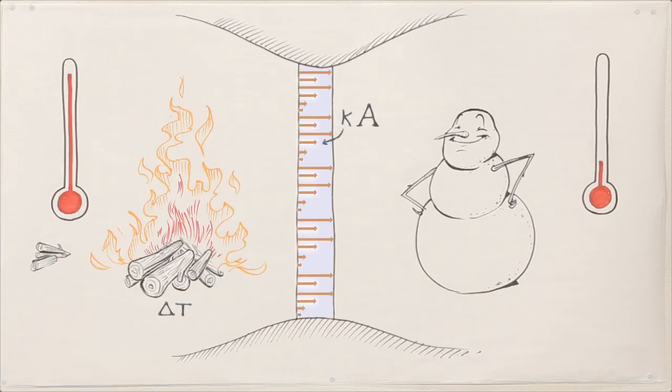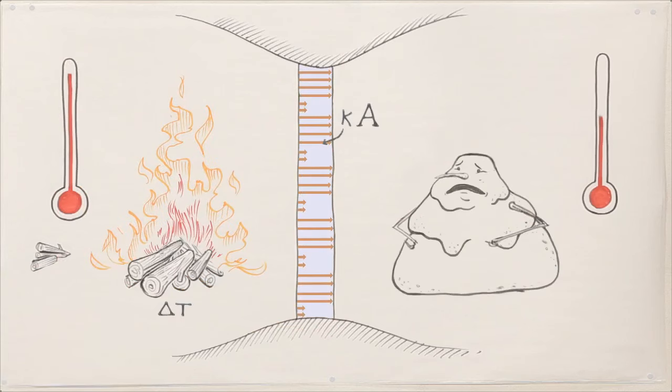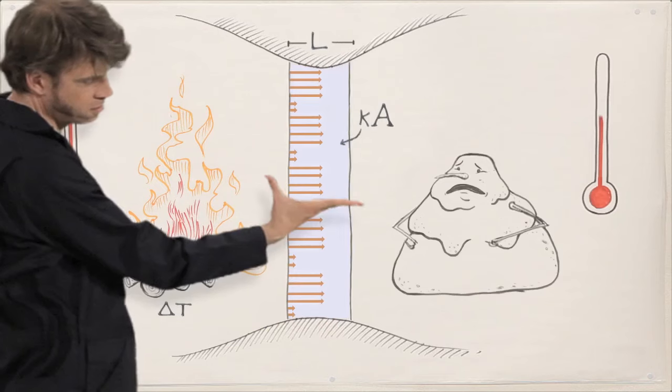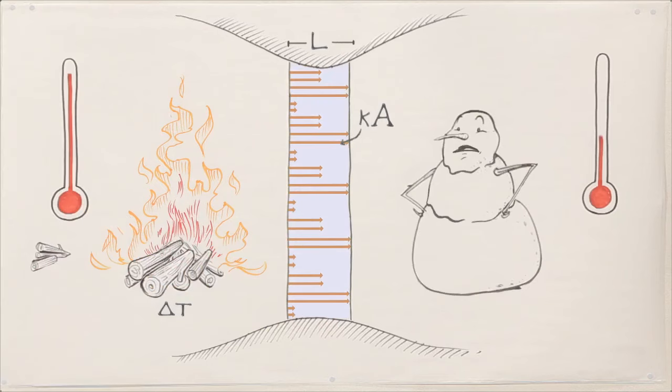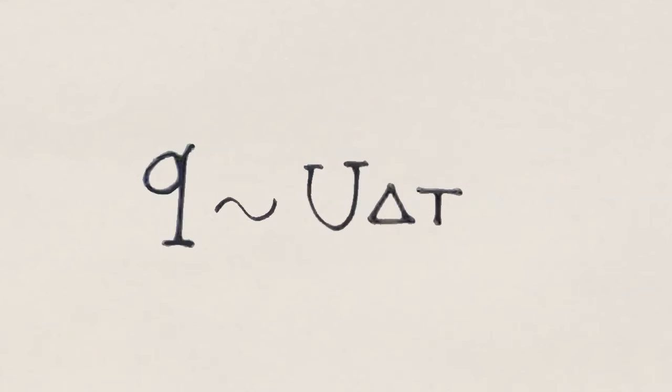That temperature difference is why the freezer will always lose more energy than the fridge. And the thicker the material, the less heat is transferred. A material's thermal conductivity per unit area at a given thickness is called its U-value.